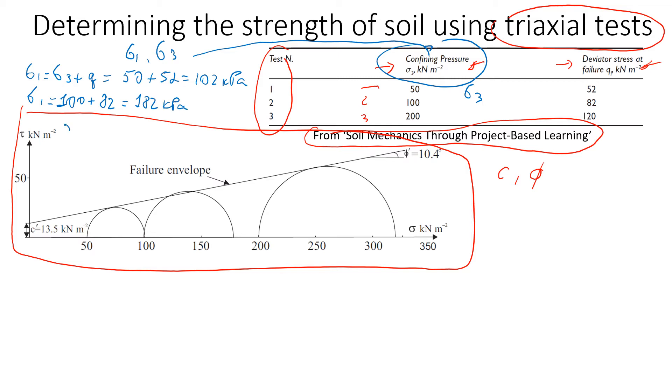For the third test, we have 200 as confining pressure plus 120 of deviator stress at failure, which gives us 320 kPa. This is the first step.